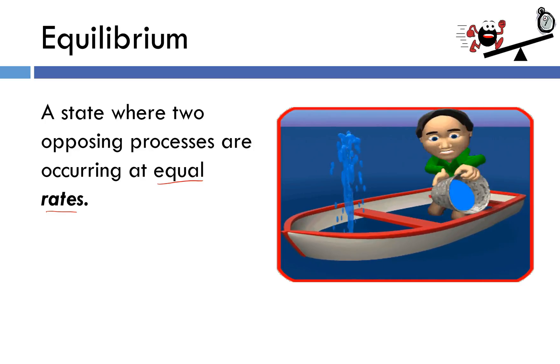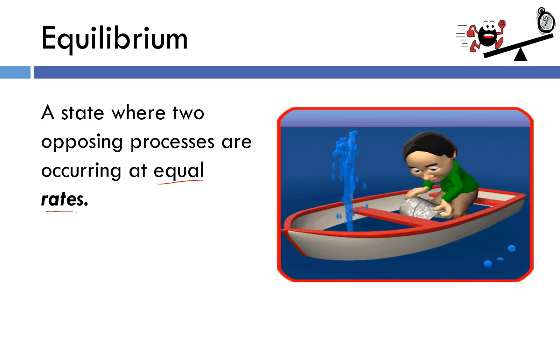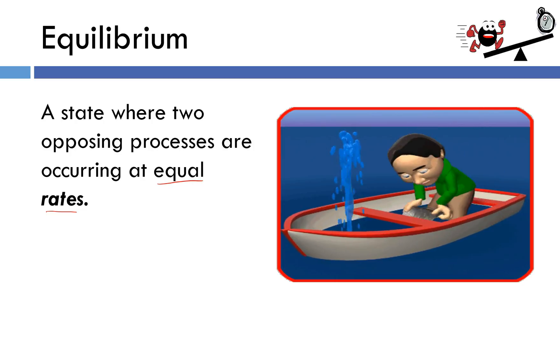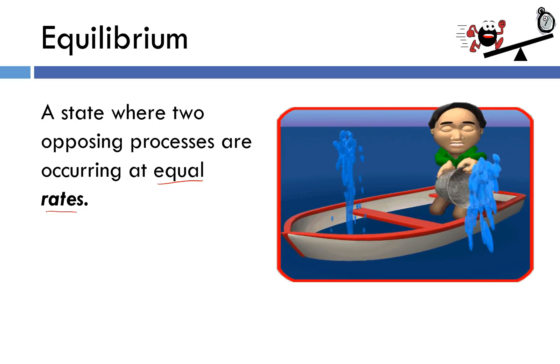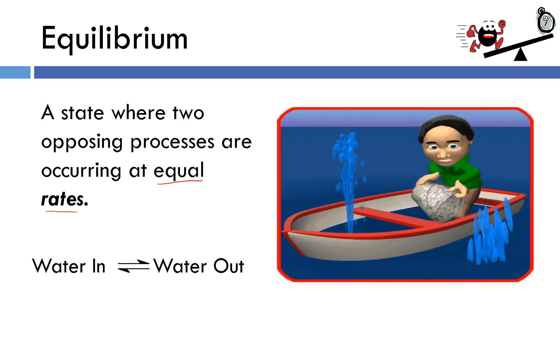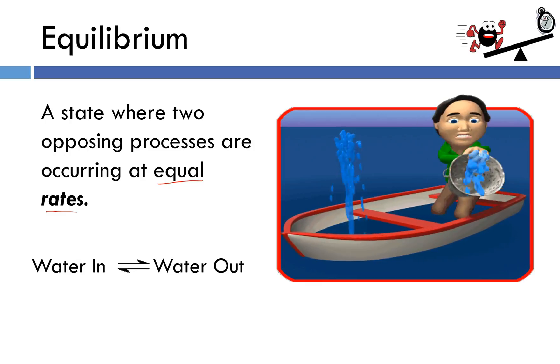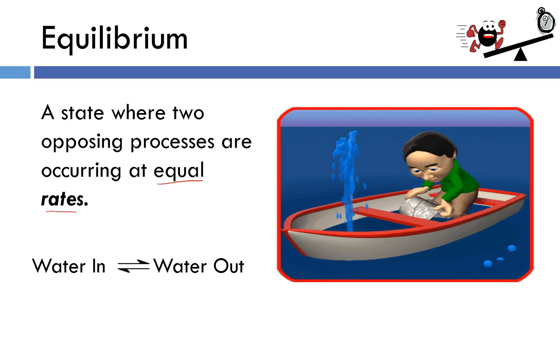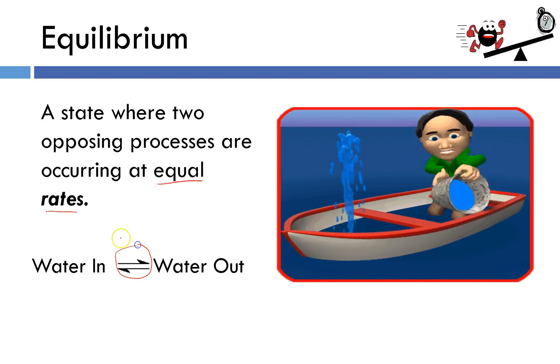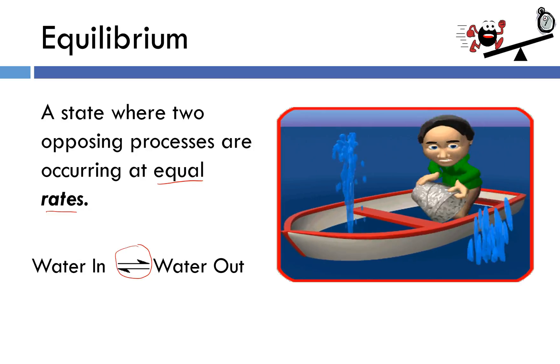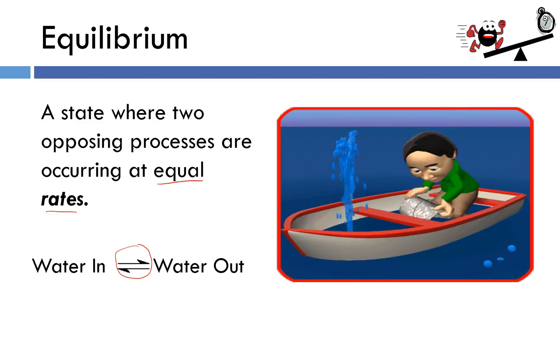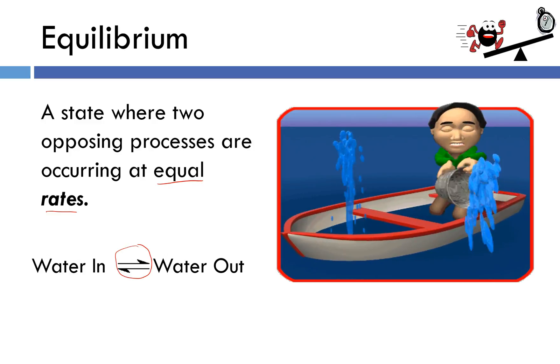But the processes are still occurring. One common misconception with equilibrium is that the reactions have stopped occurring, and that's definitely not the case. If I wanted to try to represent this GIF with a chemical reaction, it might look something like this. Water in, and then I have this reversible looking arrow kind of split. Half of it's forward, half of it's reverse. Water out. This is a new symbol that we're going to be using in our equations, and it does not mean at equilibrium. It simply means reversible.